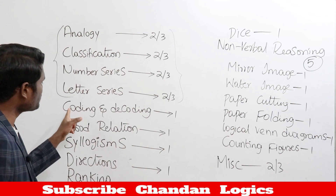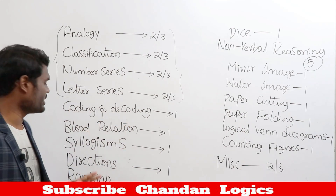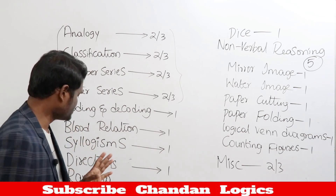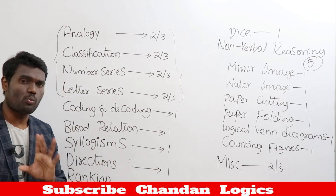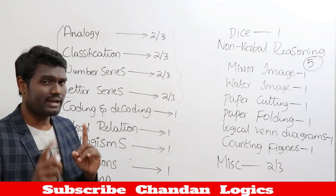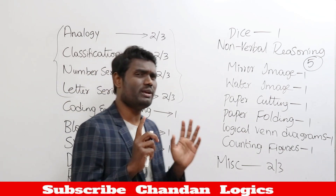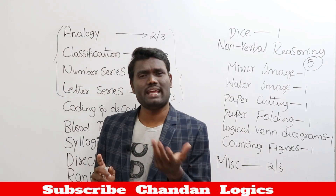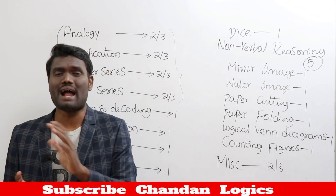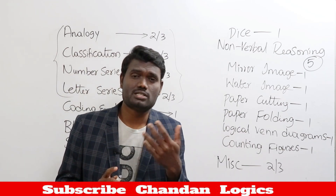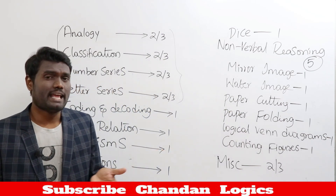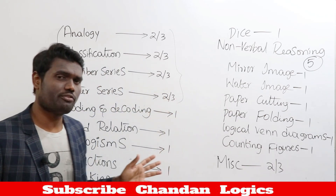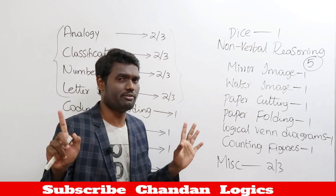From coding and decoding you'll get one question. From letter relations, one question. From syllogisms, one question. From directions, one question. From ranking, one question. Generally each topic gives only one question in SSC — unlike bank examinations where you might get three to four questions from a single topic.